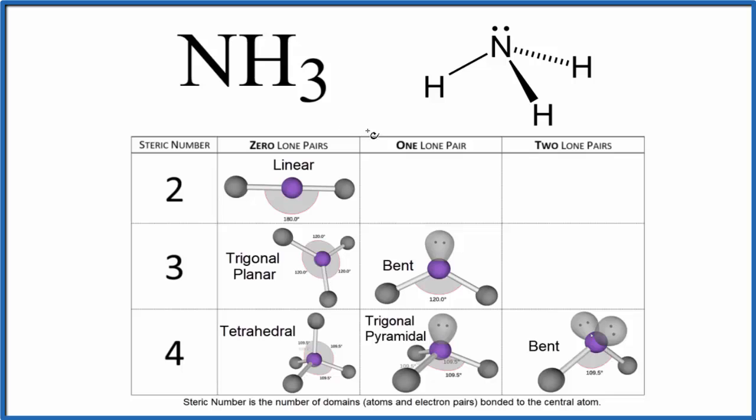So we need to start out with a valid Lewis structure. So this is a valid Lewis structure for ammonia. We have one, two, three hydrogen bonded to that central nitrogen atom, and we have this one lone pair here.